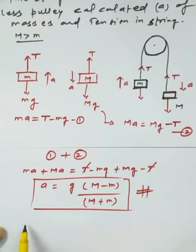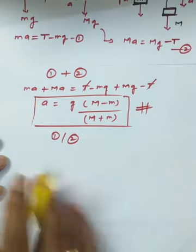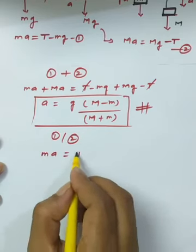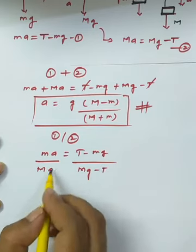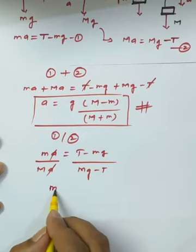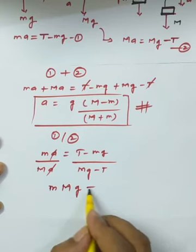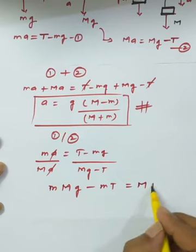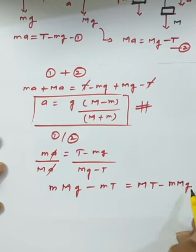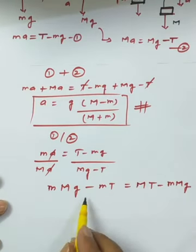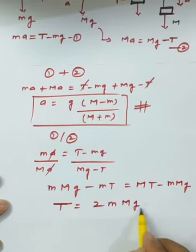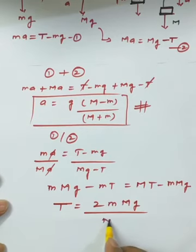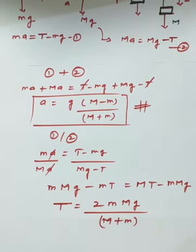To find tension, we take the ratio of equation 1 to equation 2. After simplification — mMg - mT = MT - mMg — separating tension gives T = 2mMg / (M + m).